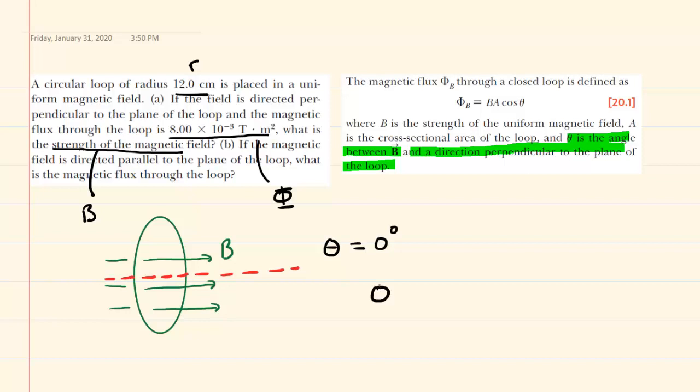So let's write down the formula and then what we'll do is solve the formula for the quantity asked for in part A, which is the strength of the magnetic field, so we're solving for B. What we would do then is divide both sides of the equation by A cosine θ.